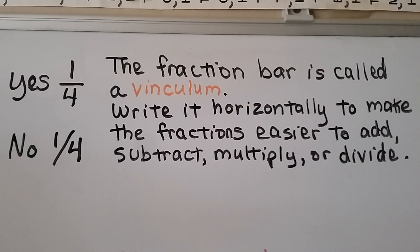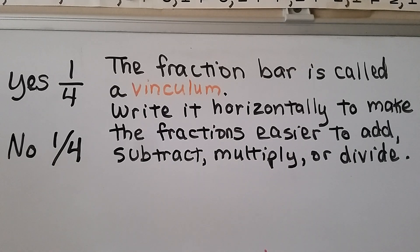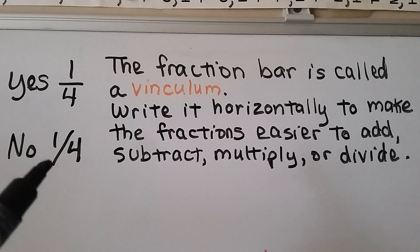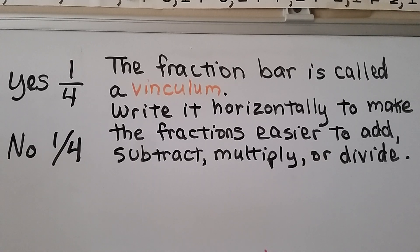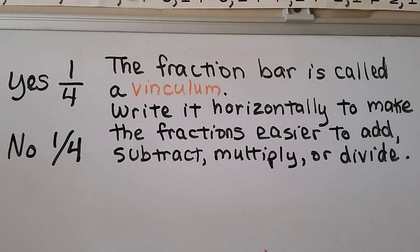The fraction bar is called a vinculum. This bar going across horizontally is called a vinculum. We need to write it horizontally to make fractions easier to add, subtract, multiply, or divide. If you write it diagonally, you'll have difficulty with fraction operations and you'll encounter trouble in high school algebra, where we use a horizontal bar a lot in higher grades of math.